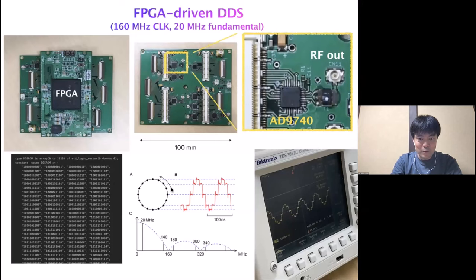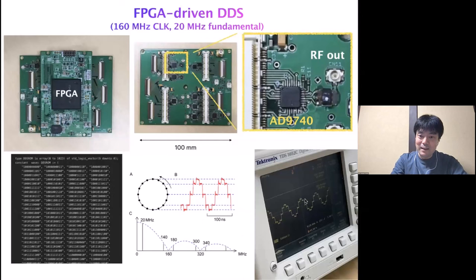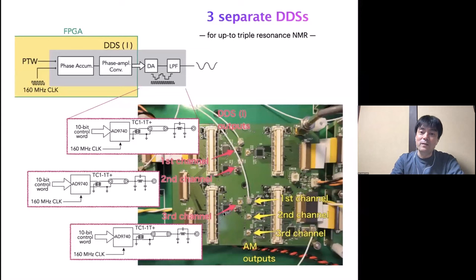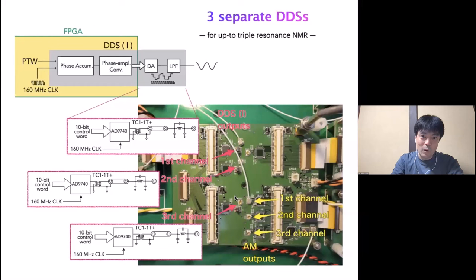When we want to change the phase of the signal, we just shift the overall phase of this wheel — it's simply a matter of shifting the address we point to in memory. In this way, we can generate a nice waveform as demonstrated on the oscilloscope display. Because we are interested in up to triple resonance experiments, we implemented three separate but identical DDS units, each with its own phase accumulator and phase-amplitude conversion table inside a single FPGA chip driven at 160 MHz, giving three separate direct-digital-synthesized waveform outputs.